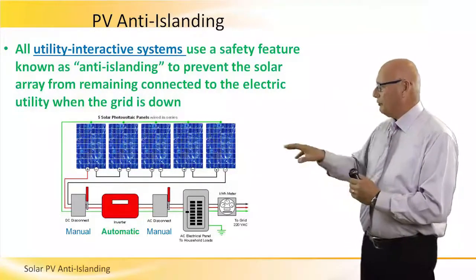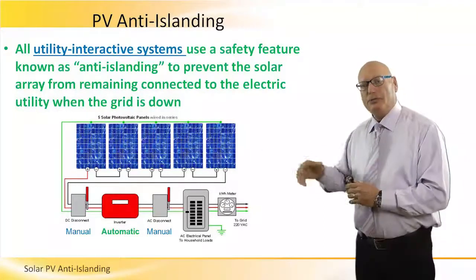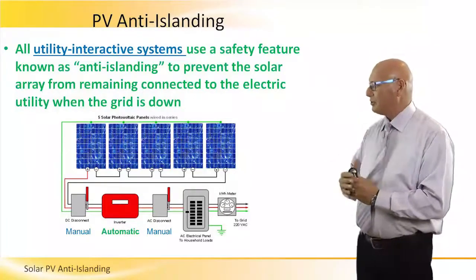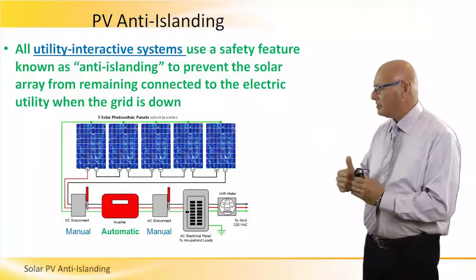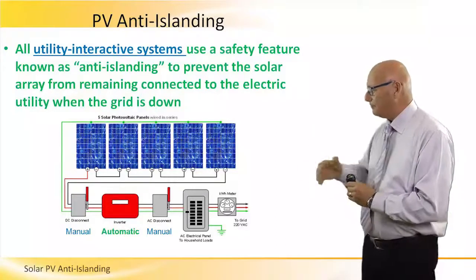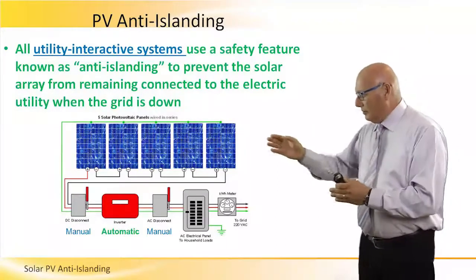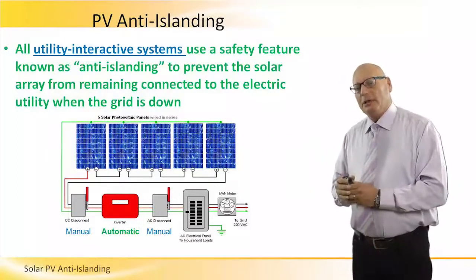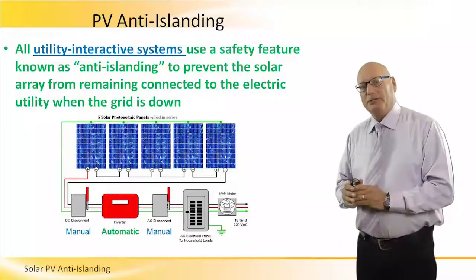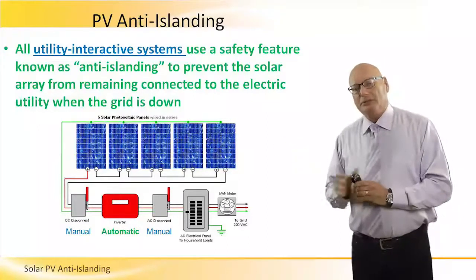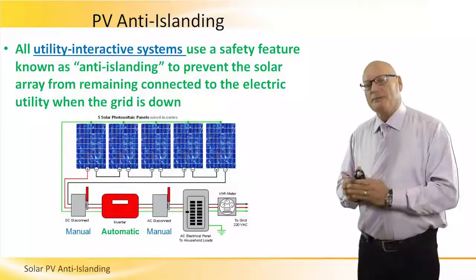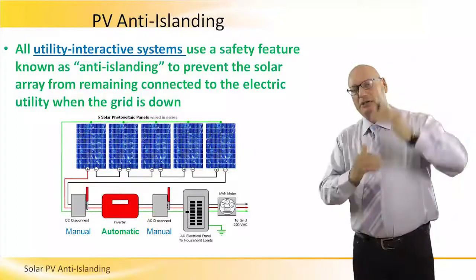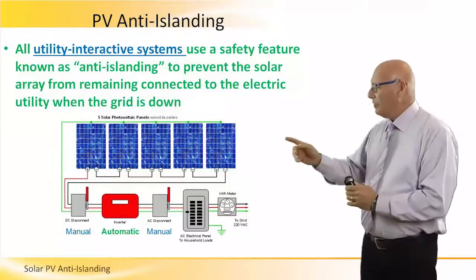In the picture at the bottom, we can see three levels of switching — three levels of disconnection — between the PV system at the top (the panels and arrays) and the grid on the bottom right. The first is an automatic one which takes care of anti-islanding, meaning that automatically when the grid is down, that device will shut down and cut the connection between the array and the grid. Then we have two manual disconnects.